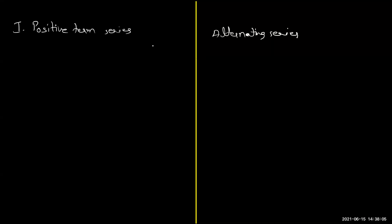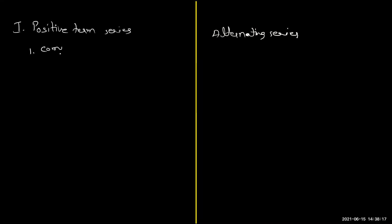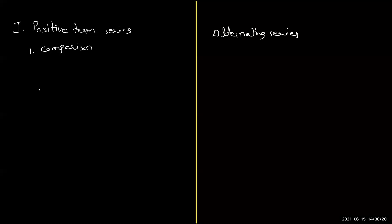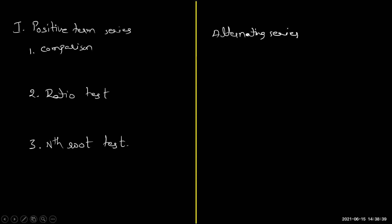In case you observe it is a positive term series, we have exactly three options to evaluate the convergence. You can use the comparison test, or you can use the ratio test (D'Alembert's ratio test), or you can use the nth root test. In these three possible ways, you can find out the convergence of the given positive term series.